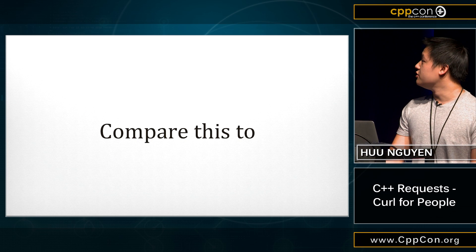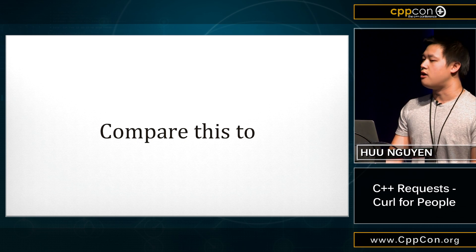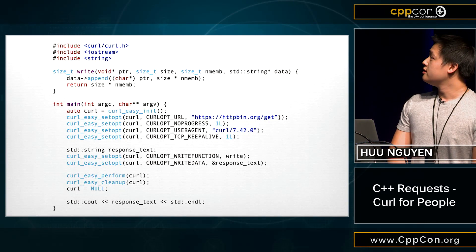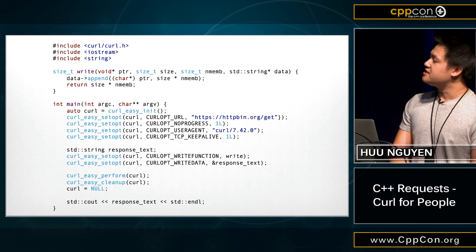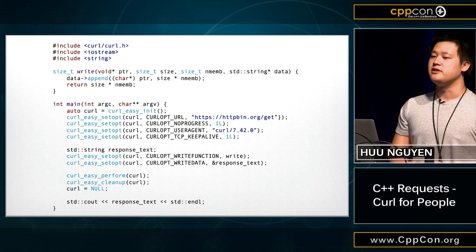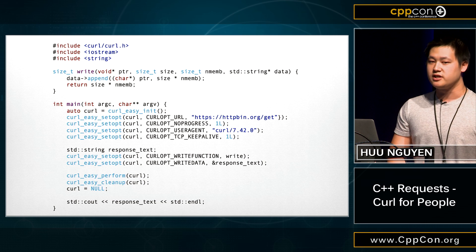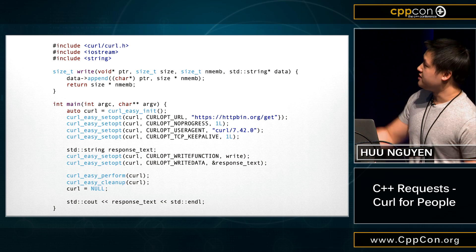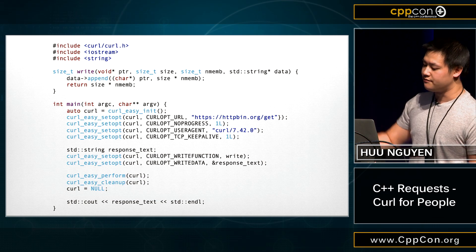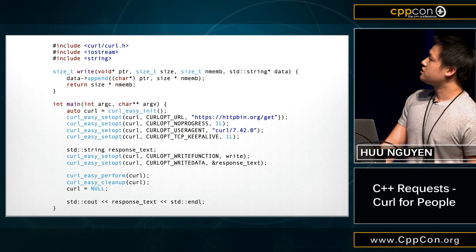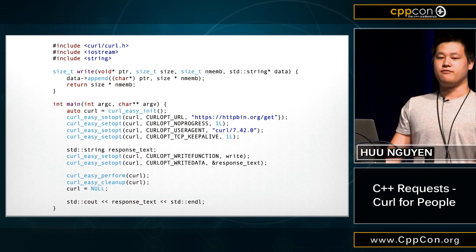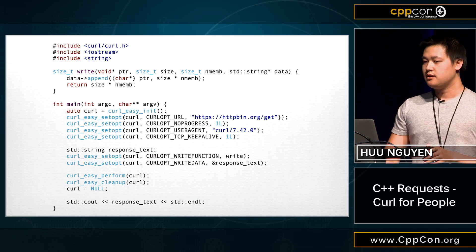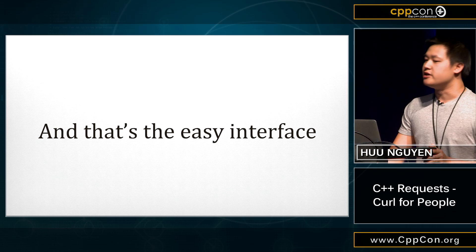Compare this to the equivalent call in libcurl. If you've programmed in C before and you've had to do networking, there's a good chance you've used libcurl. As you can see at the very top, there's a void star pointer. That's required for doing any kind of capturing of the response, and that's the easy interface.